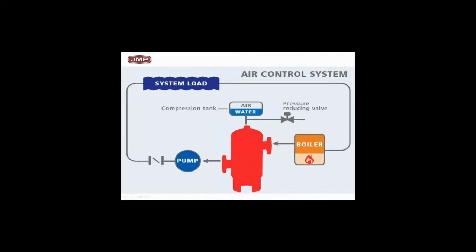The compression expansion tank has to be above the air separator so air can move back and forth by gravity. This is a system you'd see in about five to ten percent of installations — you're going to see these primarily on older projects. They work great.